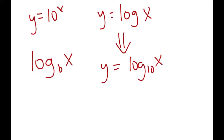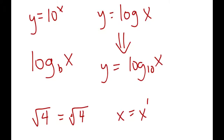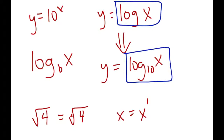Just like when you write the square root of a number like square root of 4, there should be a little 2 out front but we can skip it because it's the most common one. Or if you have x by an exponent by itself, that's the same as x to the power of 1. So when we write y equals log x, we're really talking about y equals log base 10 of x. Base 10 is the standard, and we don't need to always put the 10 in. The 10 in the original exponential equation shows up as the base number in the logarithm equation.